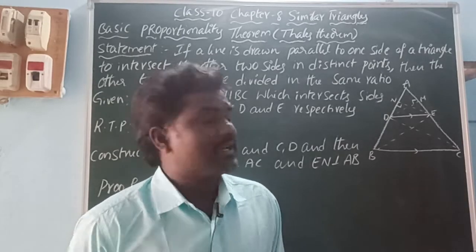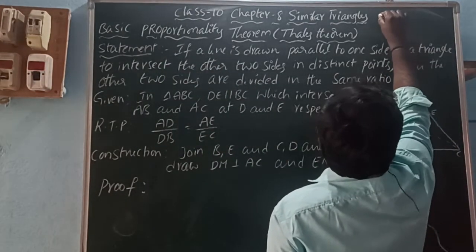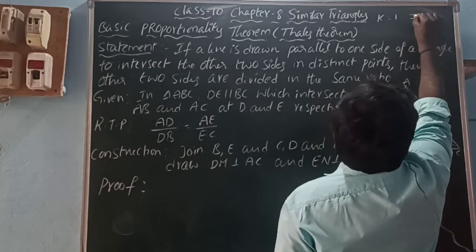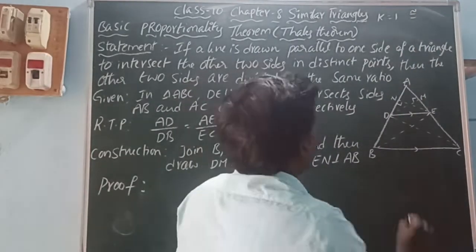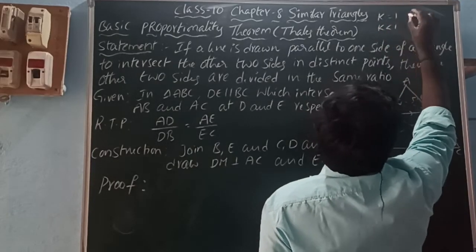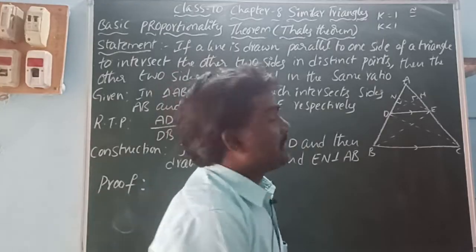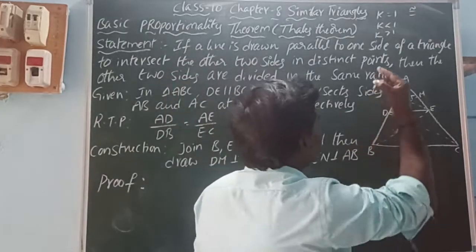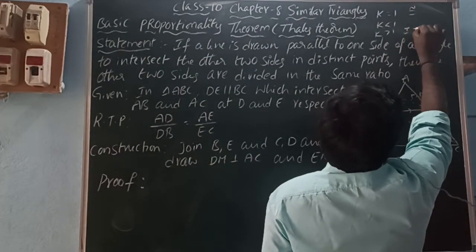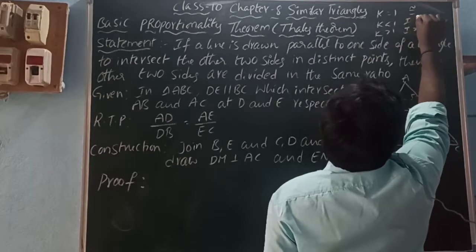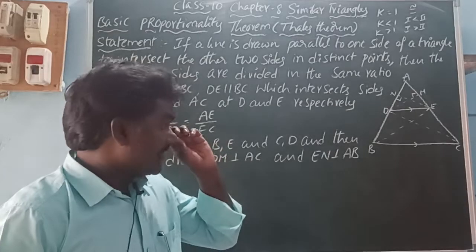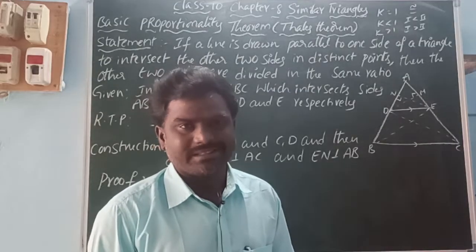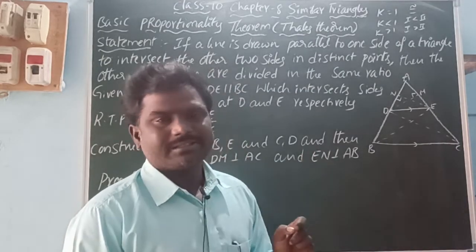That constant is called scalar factor, denoted by K. K is called scalar factor. If K is equal to 1, the triangles are congruent. If K is less than 1, one triangle is smaller than another triangle. If K is greater than 1, one triangle is greater than another triangle. Scalar factor means the ratio of the corresponding sides of the given two triangles is constant. That constant is called scalar factor.